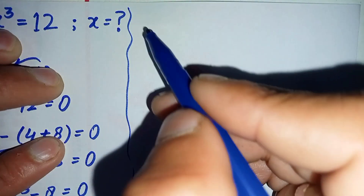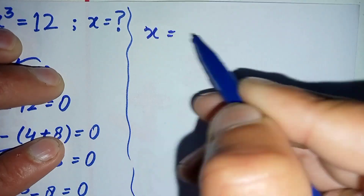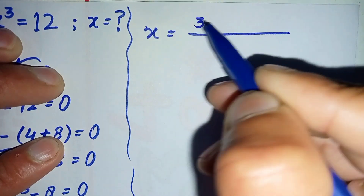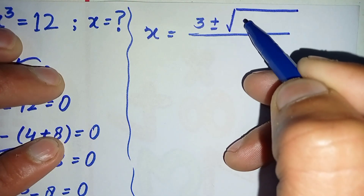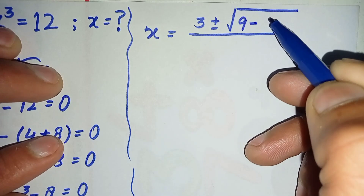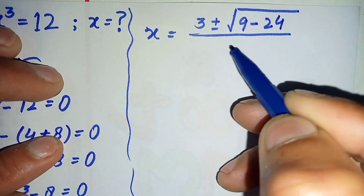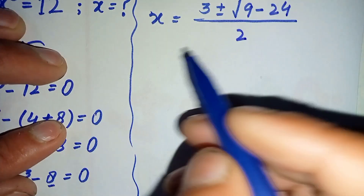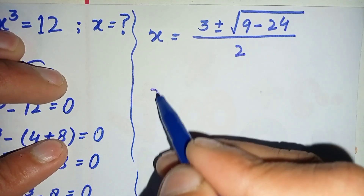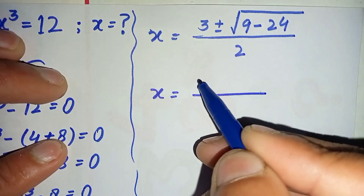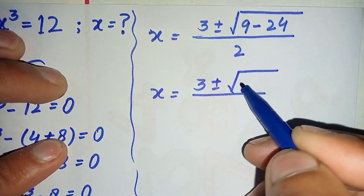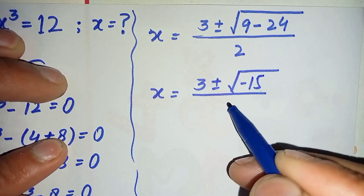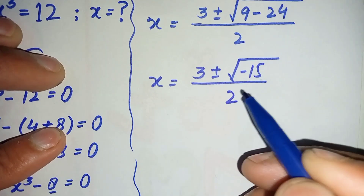Substituting the values: x equals 3 plus or minus the square root of (minus 3 squared minus 4 times 1 times 6) divided by 2 times 1. This simplifies to x equals 3 plus or minus the square root of (9 minus 24) divided by 2, which gives the square root of minus 15.